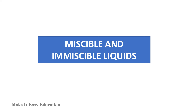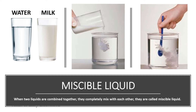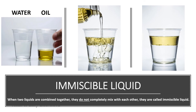Miscible and immiscible liquids. When two liquids are combined together and they completely mix with each other, they are called miscible liquids. For example, when water and milk are combined together, they completely mix with each other. When two liquids are combined together and they do not completely mix with each other, they are called immiscible liquids. For example, when water and oil are combined together, they do not mix with each other.